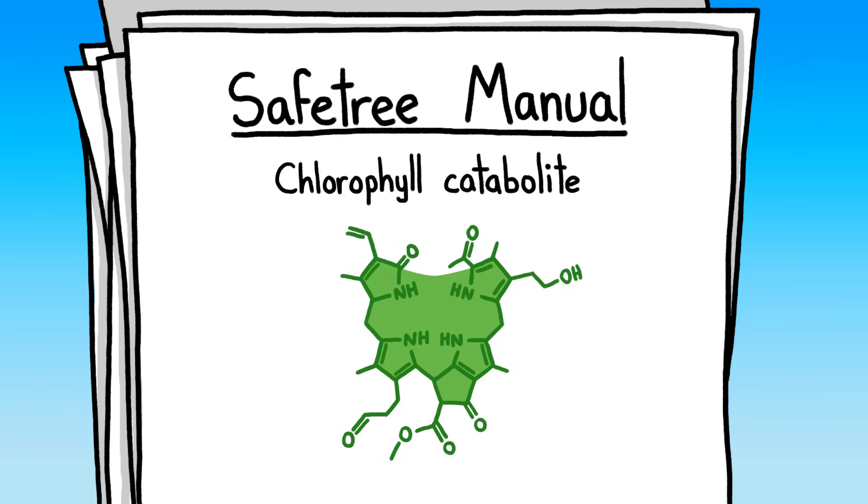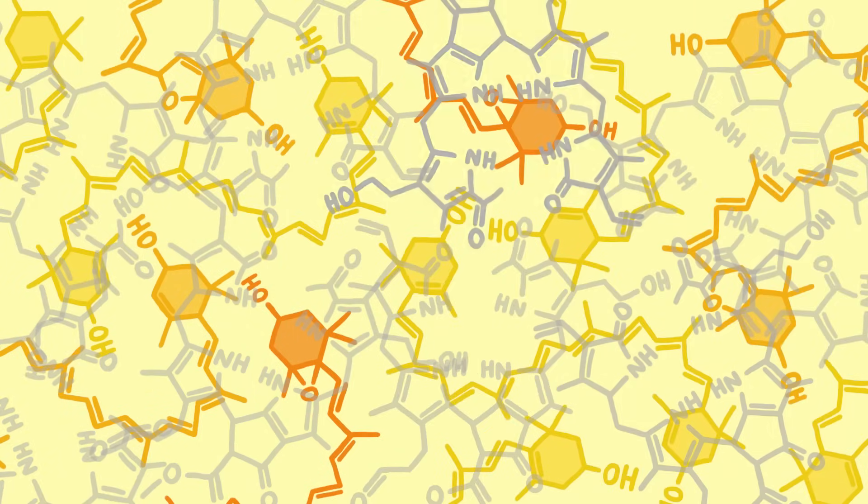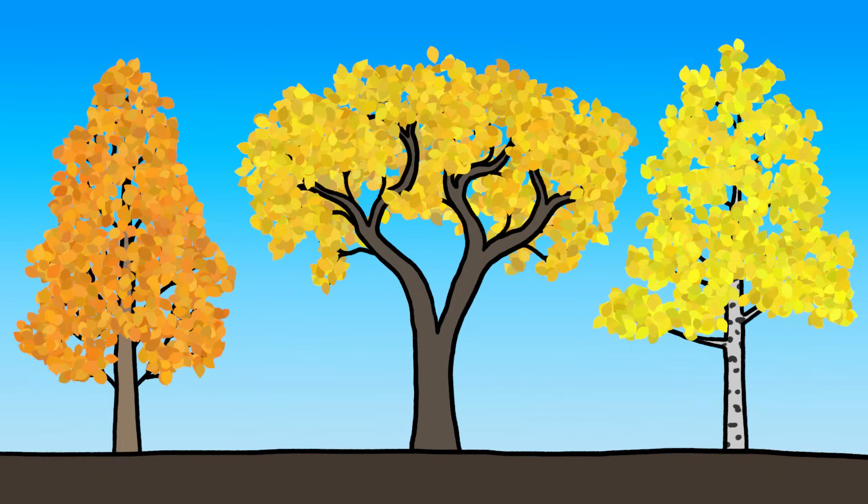leaves break down their chlorophyll into less dangerous molecules that are typically transparent, though sometimes yellow. Either way, with the bright green molecules gone, yellow and orange pigments that were there all along helping with photosynthesis are no longer overshadowed, and ta-da, yellow and orange leaves.